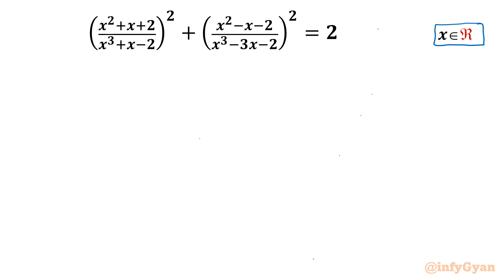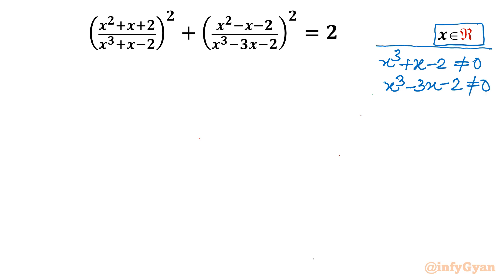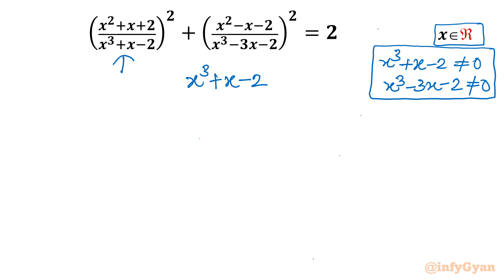Let's get started by writing the domain. The denominator cannot be 0, so I will frame two equations: x³ + x - 2 ≠ 0 and x³ - 3x - 2 ≠ 0. We will exempt those x values which make our denominators 0. I will consider the first denominator x³ + x - 2, and you will see two methods to find its factorization.